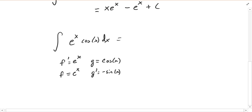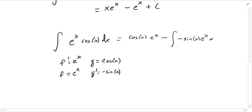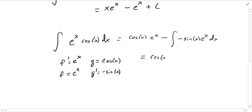Applying the formula, the antiderivative of eˣ·cos(x) dx is going to be f times g — cosine of x times e to the x — minus the antiderivative of f times g prime, which is minus sine of x times e to the x dx. Combining the two negatives, that becomes: cosine x·eˣ plus the integral of sine x·eˣ dx.